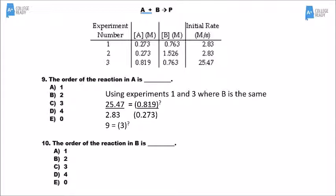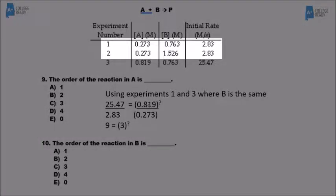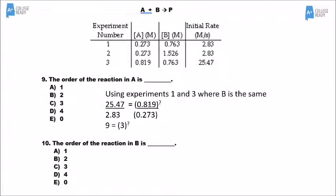For number 10, we look at the data table and pick two experiments where A stays the same and B changes — that would be experiments 1 and 2. Even though B basically doubles, the rate has no change whatsoever. When a reactant changes and the rate doesn't change, we say that's zeroth order. So with respect to B, it has no effect; 2 to the zeroth power equals 1, and the order is 0.